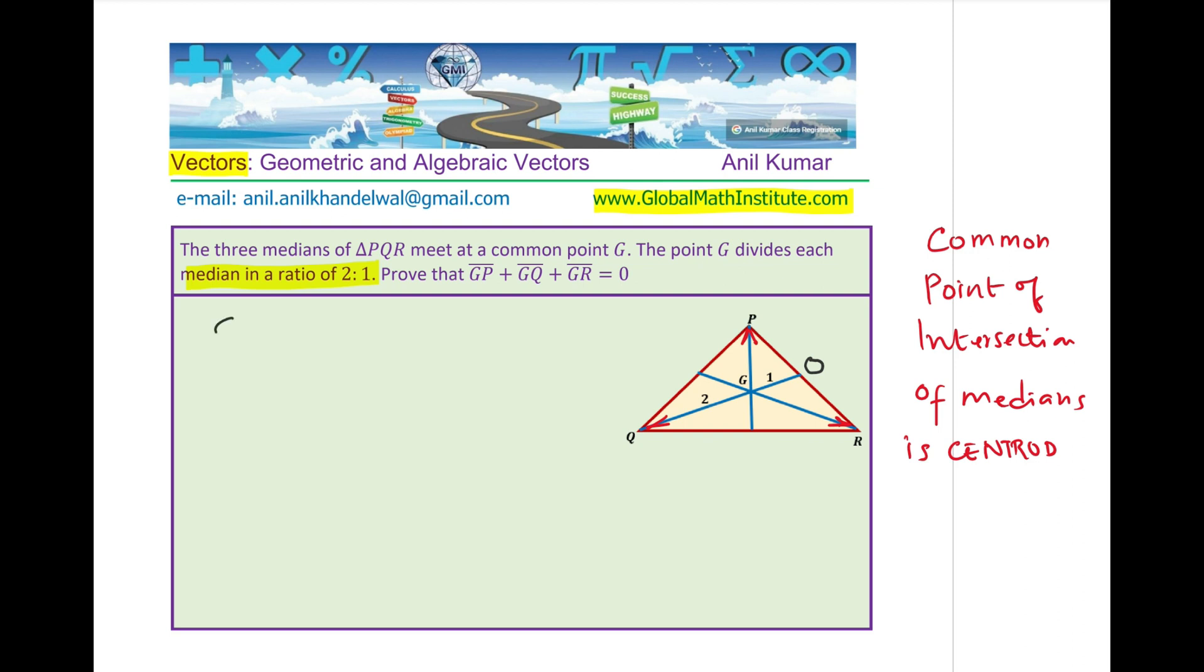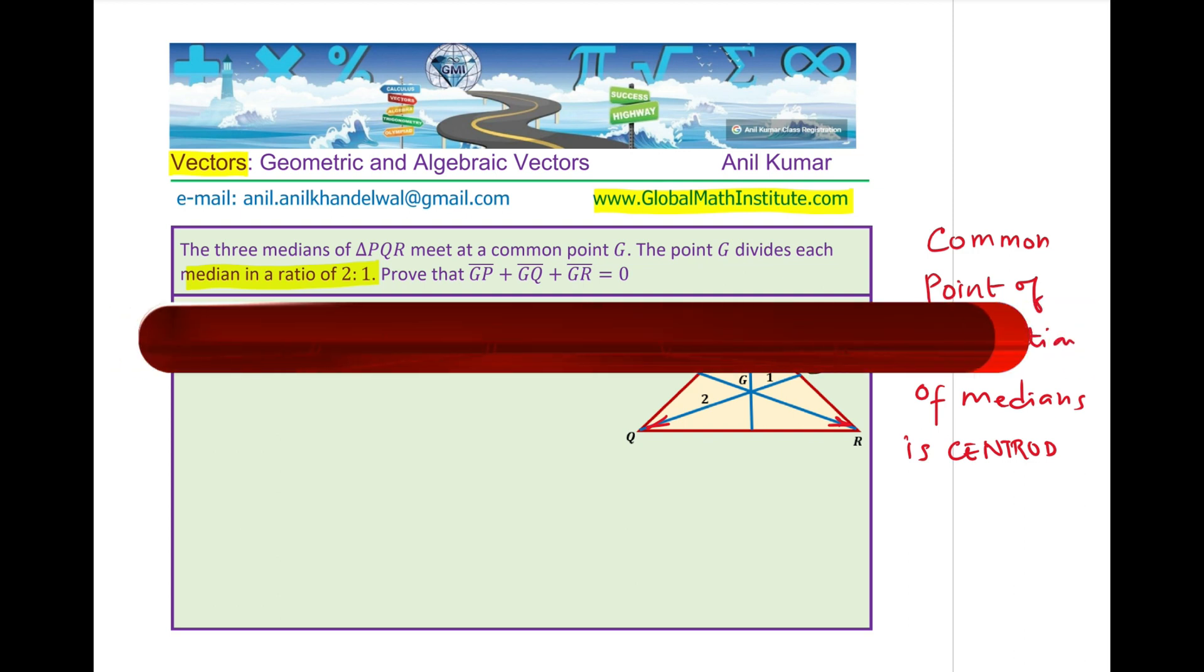Let's try to prove that the sum of GP plus GQ plus GR is equal to 0. That is what we have to do. We can begin from GP plus GQ plus GR and write these vectors as combination of vectors.